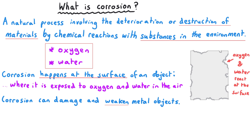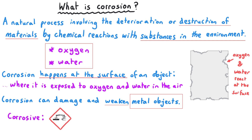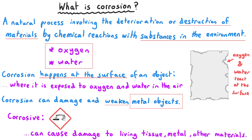In this topic, when we talk about corrosion we are meaning the corrosion of metals. You will have heard of a similar word, corrosive, in the acids topic — for something to be corrosive it means it can cause damage to living tissue, metal, or other materials when it comes into contact with them, and so that type of substance should be handled with extreme care.